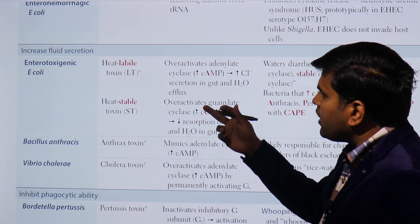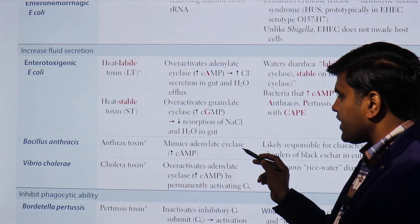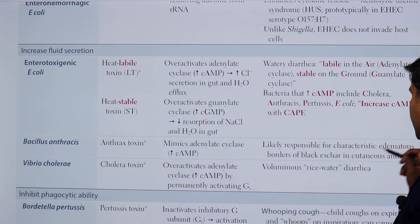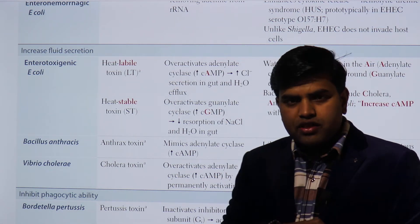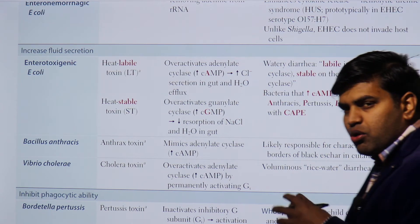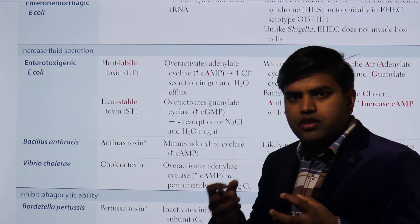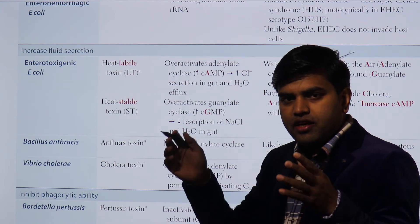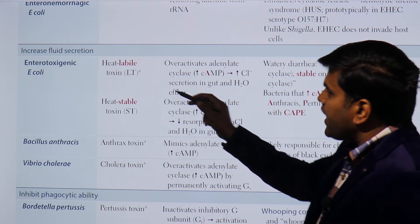Bacillus anthracis toxin acts by mimicking adenylyl cyclase, increasing cyclic AMP, and is responsible for the characteristic edematous black scar in cutaneous anthrax. In cutaneous anthrax there is a black eschar with a surrounding edematous area. That edematous region results from increased intracellular cyclic AMP pumping water and electrolytes out of cells into the surrounding tissue.